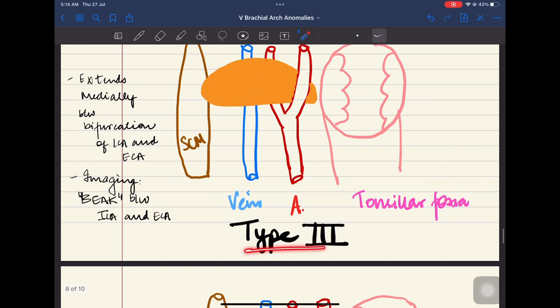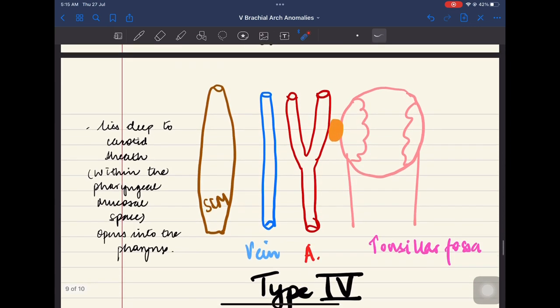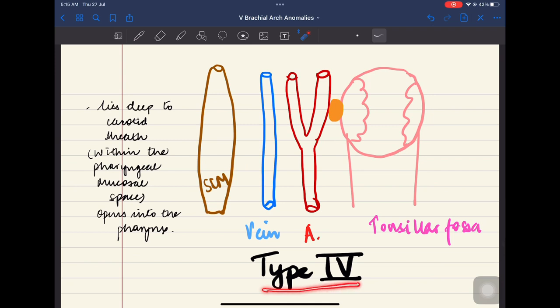Now coming on to type 3 Bailey's classification. In this, it extends medially between the bifurcation of internal and external carotid artery. Upon imaging, we can see a beak between the ICA and the ECA. Now coming on to type 4 Bailey's classification. In this, it lies deep to the carotid sheath within the pharyngeal mucosal space. And it opens into the pharynx.